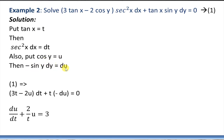We let tanx = t, so sec²x dx = dt. We let cosy = u, so -siny dy = du. Substituting into the given differential equation: (3t - 2u)dt + t(-du) = 0, which gives 3t·dt - 2u·dt - t·du = 0. This is clearly a linear differential equation, and we know how to solve it.